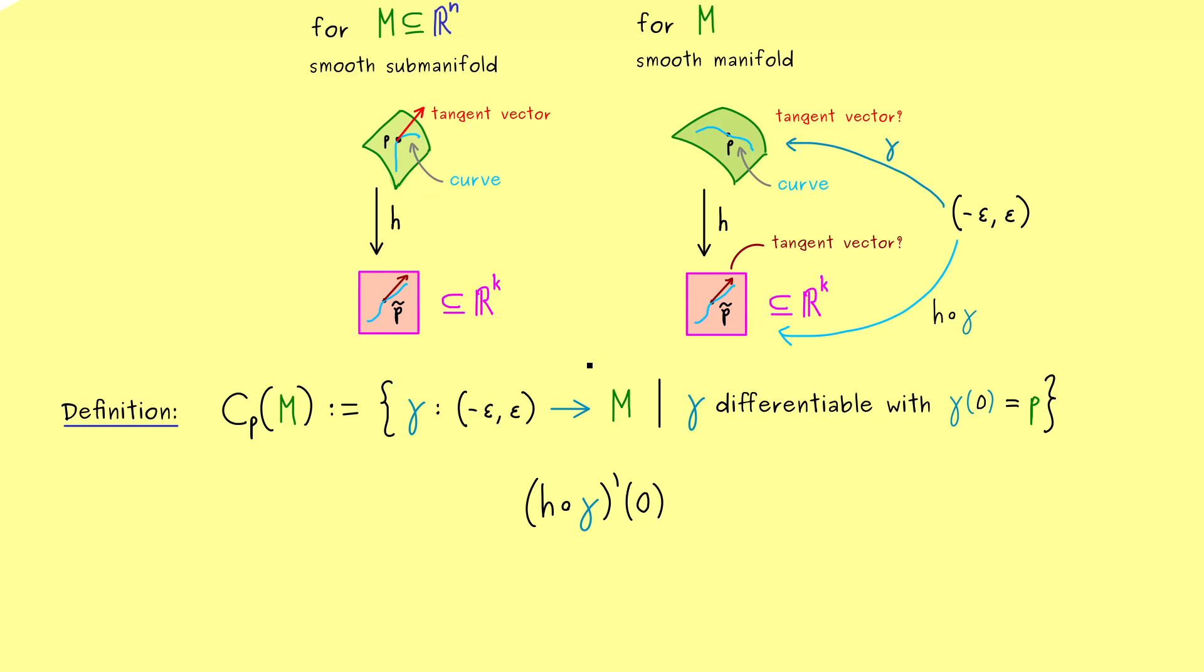So as always, we simply use the derivative at the point 0. Now at this point, please recall, for the submanifolds, the tangent vector was not so dependent on the curve at all. More precisely, different curves can give us the same tangent vector in the end.